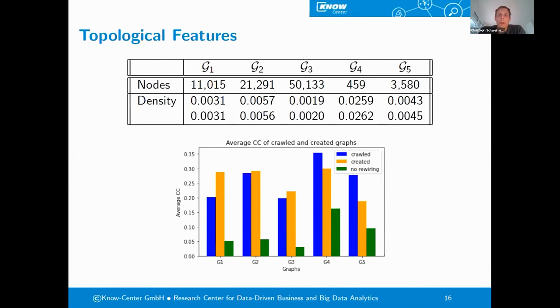When we are looking at the average clustering coefficient in this graph, also for the five graphs, we see as the blue bins, the average clustering coefficient for the crawled graphs, the result for the created graphs as an orange bin, and without applying the fourth step, the edge rewiring result as the green bin. We see here that we have quite a nice overlap between the created and crawled graphs, and the clustering coefficients are basically in the same range, whereas when we are not applying the edge rewiring procedure, the clustering coefficient is way lower, which is an indicator that we need to apply the edge rewiring.